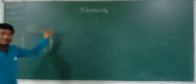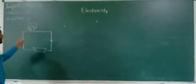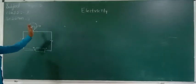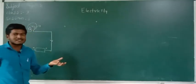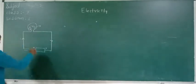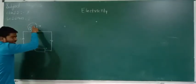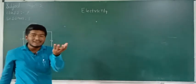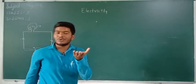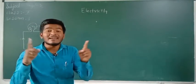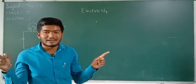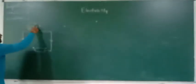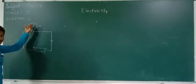The bulb contains a filament. This filament has a low resistance. So when the charges flow through this filament, the filament gets heated. When a metal gets heated, it radiates light. So when it is heated, it radiates light and we get the light.